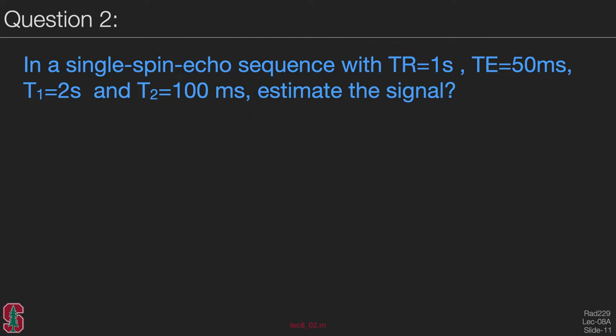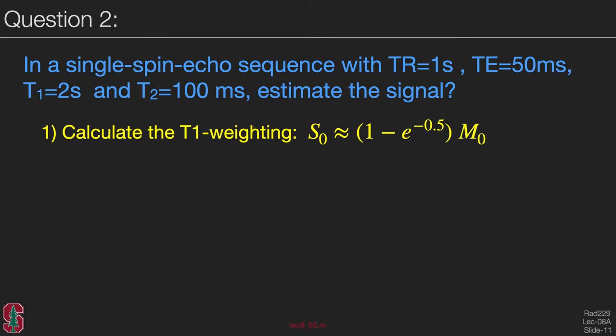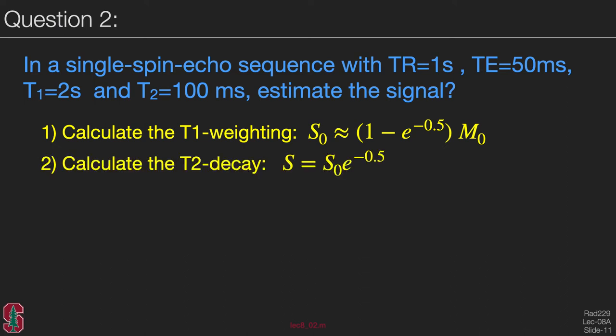Consider a single spin echo sequence with TR of one second, TE of 50 milliseconds, T1 of two seconds, and T2 of 100 milliseconds — can you estimate the signal? First, calculate the T1 weighting based on recovery over one repetition. We ignore the echo time and assume recovery is over the full TR, which is basically half a T1.